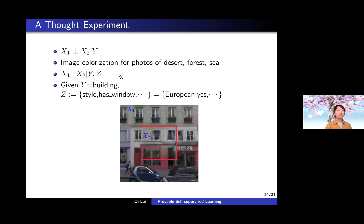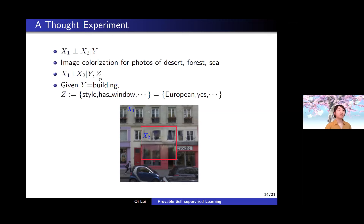It's not always clear what Z is, but we do not need to know what it is—it just enters our results. Naively, one could choose Z to be X2 or X1, which satisfies the assumption automatically, but that's not helpful because our sample complexity depends on the dimension of Z. If Z is very large, it does not give good performance. Roughly, X1 and X2 draw shared information captured by Y and Z.